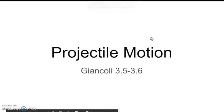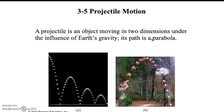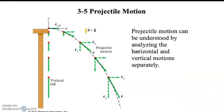Projectile motion is when an object moves in two dimensions under the influence of gravity. The path that most projectiles will take in perfect conditions will be a parabola, as shown. With projectile motion, we want to look at horizontal and vertical motion separately. In the horizontal there is no acceleration, which means our horizontal velocity stays constant.